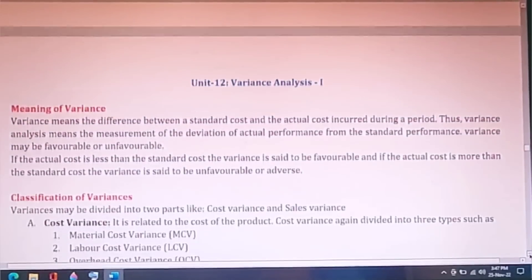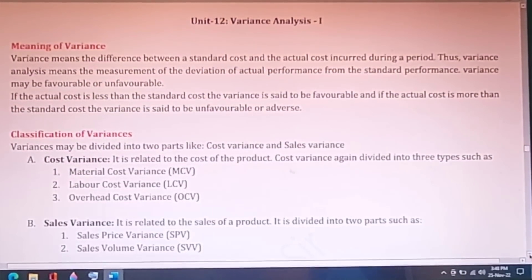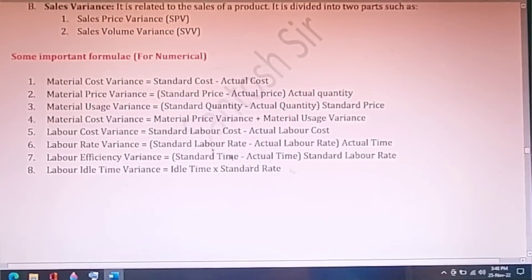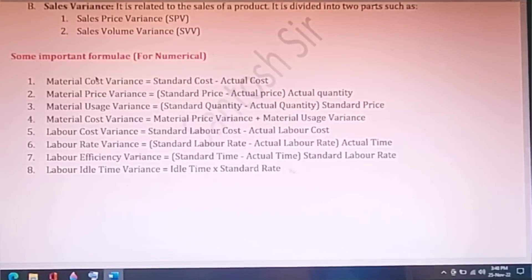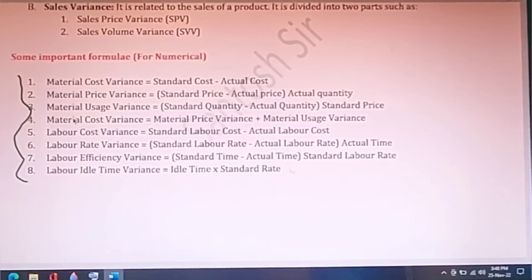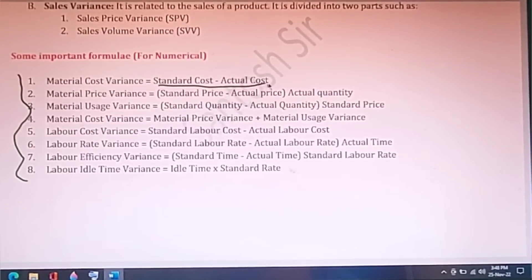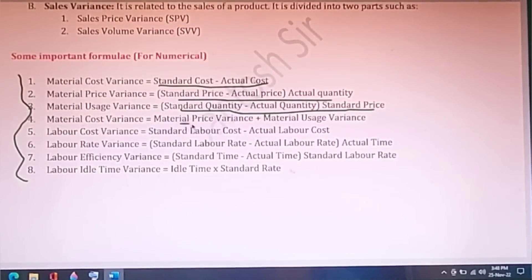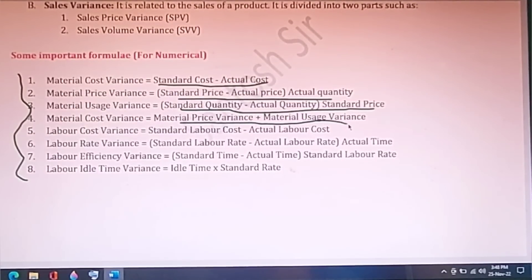The next unit is on variance analysis, where numerical questions appear. All important formulas are given here. Material cost variance equals standard cost minus actual cost. Material price variance equals (standard price minus actual price) multiplied by actual quantity. Material usage variance equals (standard quantity minus actual quantity) multiplied by standard price. Material cost variance equals material price variance plus material usage variance — these formulas are very important for numericals.